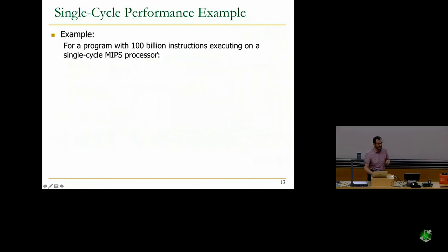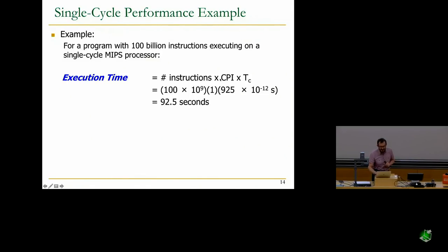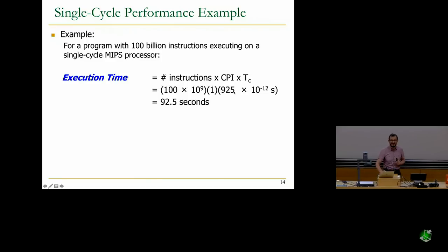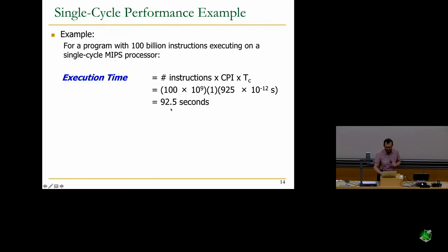If you are running 100 billion instructions and executing on the single-cycle machine we designed, the execution time is simple: 100 billion times one cycle per instruction times the cycle time of 925 picoseconds, giving about 92.5 seconds.